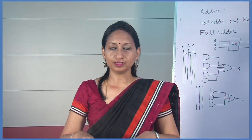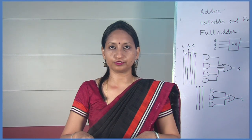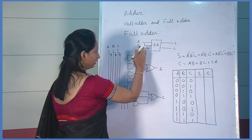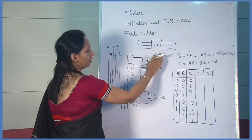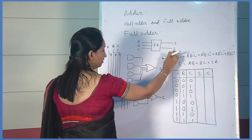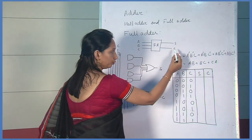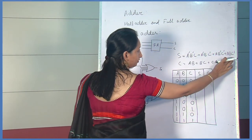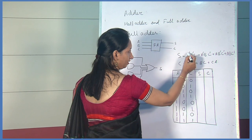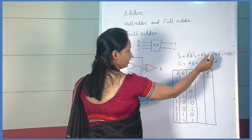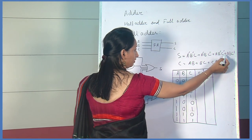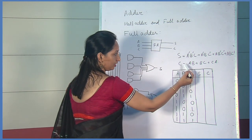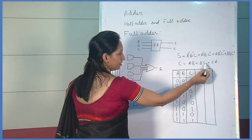Now let us see the truth table and logic circuit of a full adder. Here is the block diagram — 3 inputs A, B, and C and 2 outputs S and C, that is sum and carry. The output sum is represented as: Ā·B̄·C plus Ā·B·C̄ plus A·B̄·C̄ plus A·B·C. And the carry equation is C equals A·B plus B·C plus C·A.